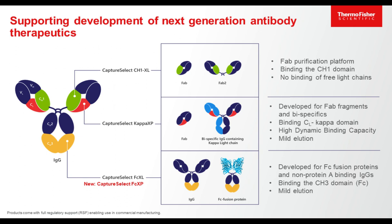Moving on is the Kappa-XP product, developed specifically for FAB fragments as well as bispecifics. It binds to the constant region of the light chain, meaning it binds all Kappa domains. Unlike Protein-L, which doesn't cover all Kappa domains, the Kappa-XP binds to all Kappa light chains — making it extremely suitable for FAB fragments, bispecifics, or even monoclonals if the Protein A binding site is disrupted.